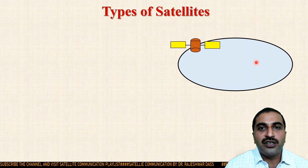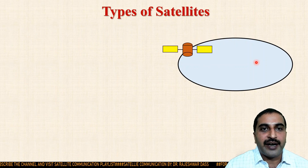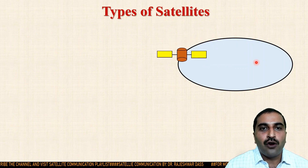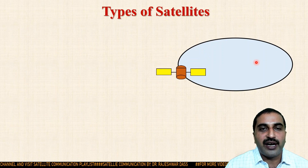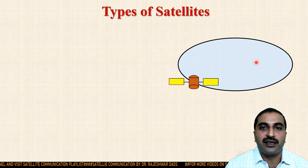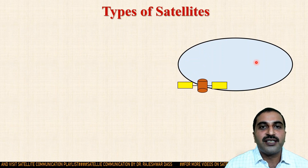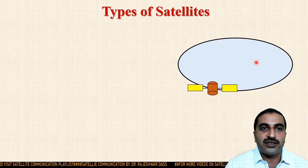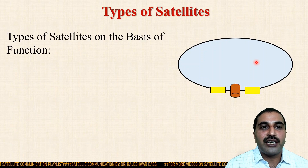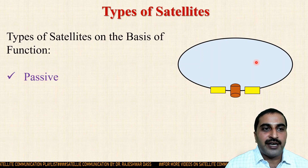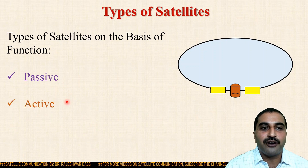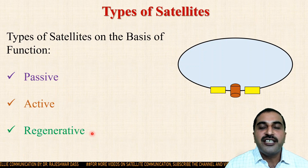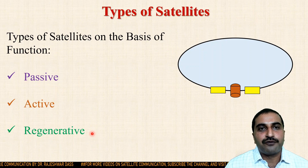On the basis of how the satellite receives the signal from the transmitting Earth station and transmits it towards the receiving Earth station, there are different types of satellites. It may be a passive type of satellite, an active type of satellite, or a regenerative type of satellite.